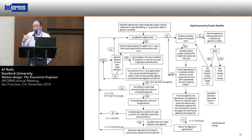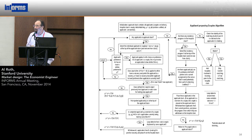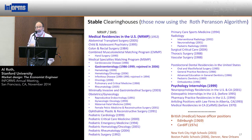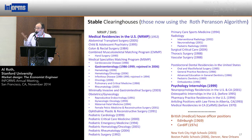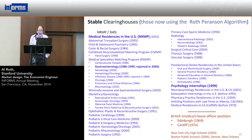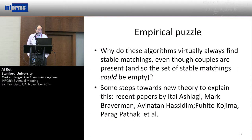We were luckier than we were entitled to be with what we knew. It turns out, although it's easy to produce little examples where there's no stable match when there's a couple, when you have 1,800 couples in a market with 23,000 jobs, you almost never find that you can't find a stable match. We have a lot of data on this now because the Roth-Peranson algorithm, used to organize these matches, is used in lots of annual labor markets, many of which have couples. You virtually never find that you can't find a stable match.